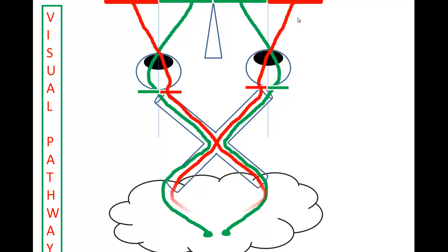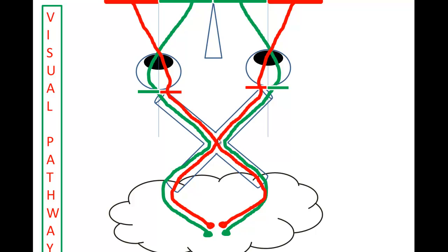Light from the temporal half of your visual field passes the lens and falls on the nasal half of the retina — you can see the crossing of the light. The light from the temporal half of the visual field enters the optic nerve and at the level of the optic chiasm it crosses to the opposite side, enters the optic tract and synapses. The very important concept here is that if pathology affects the optic nerve, it affects light from both the temporal and nasal sides of vision, but the optic nerve only represents pathology related to one eye.